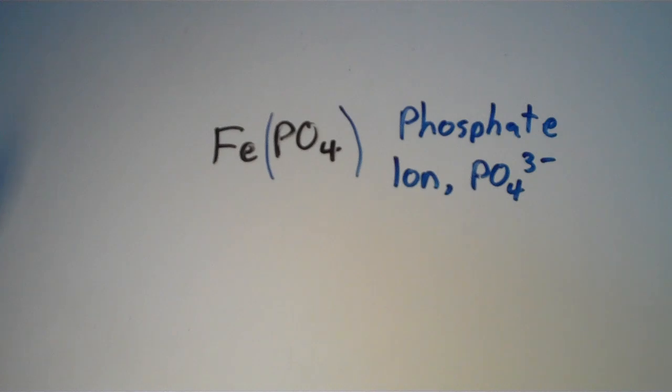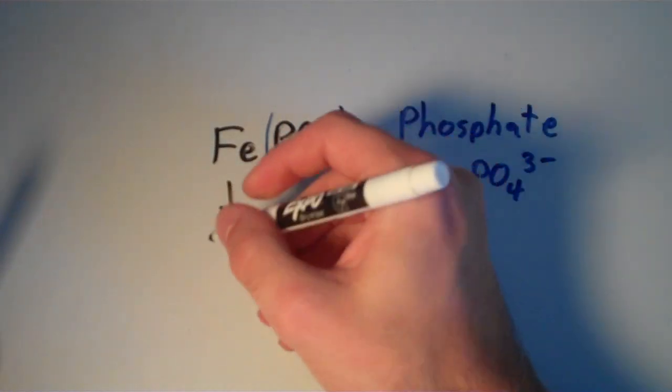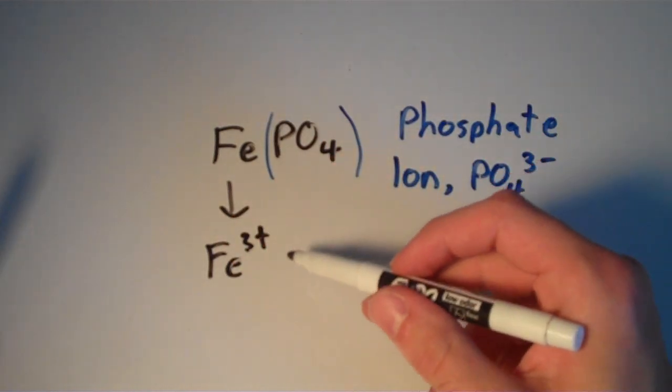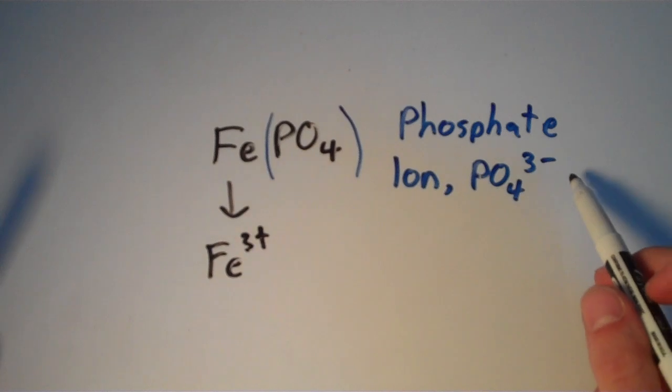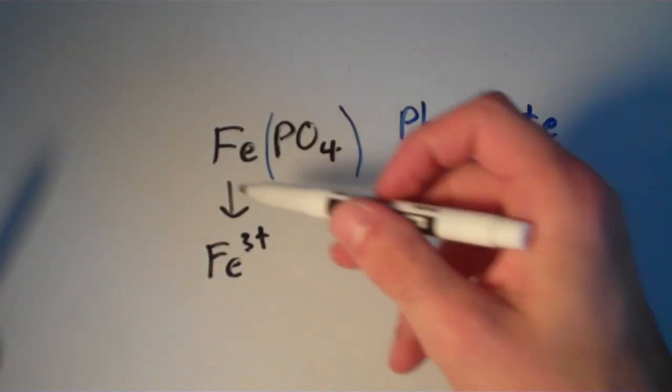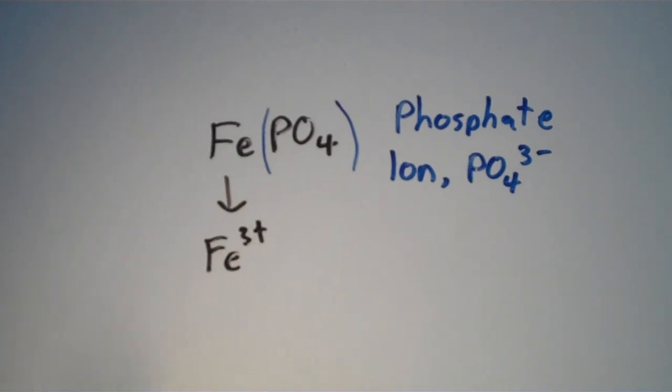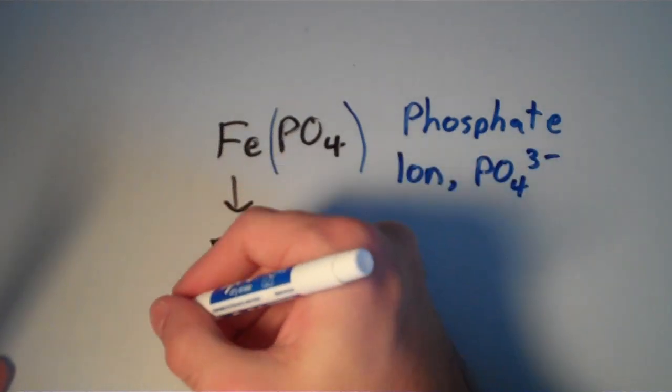So given that our phosphate ion has a charge of three minus and that we have only one iron ion, we can conclude that the charge of this is just going to be Fe3+, because we need a charge of three plus to neutralize this three minus charge, so that our compound overall is charge neutral. So the Fe3+ ion, that is called the iron(III) ion.